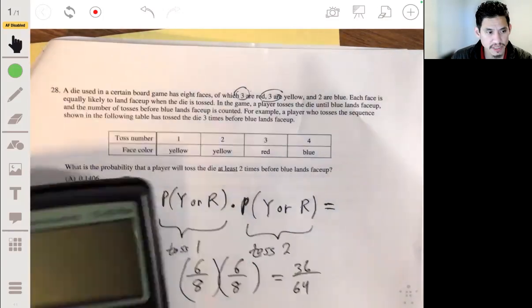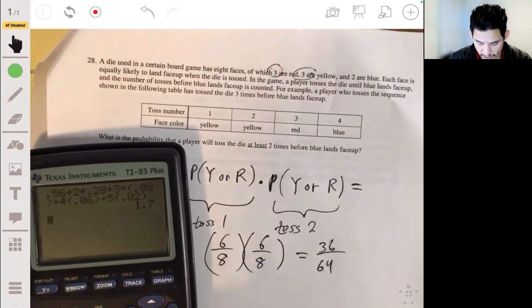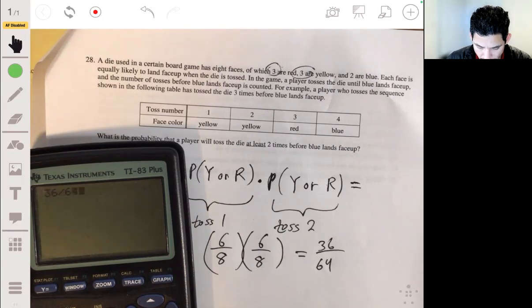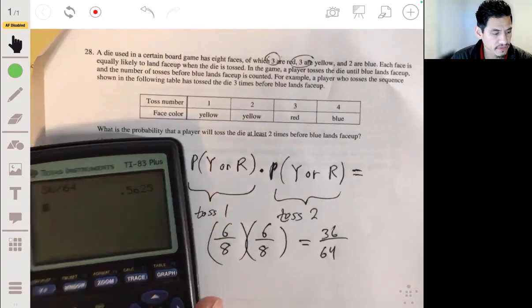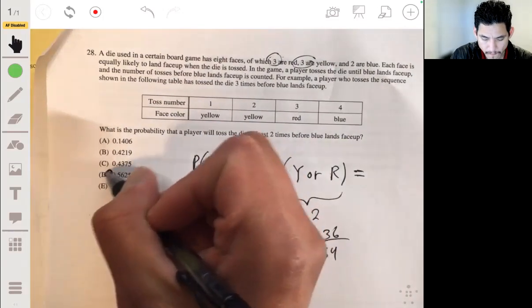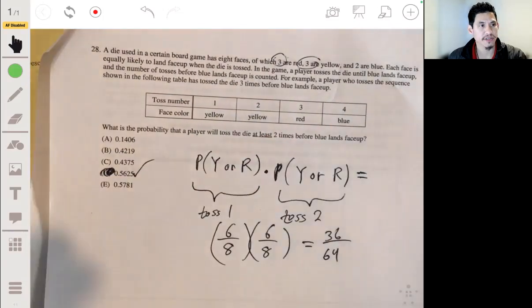So 36 over 64. And the decimal approximation, it's probably going to be a little more than that. Yes. Yeah. 0.5625. So the answer will be B.